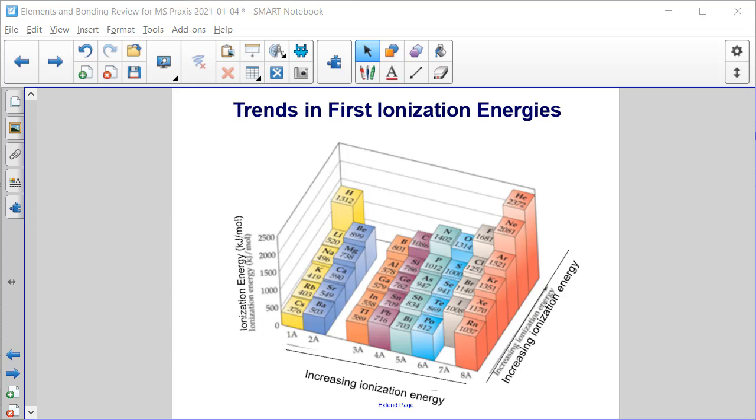Here's a visual representation of the trends that we see in first ionization energies. So as we go across a row of the periodic table, as we're adding a proton in the nucleus to that energy level, the ionization energy increases.